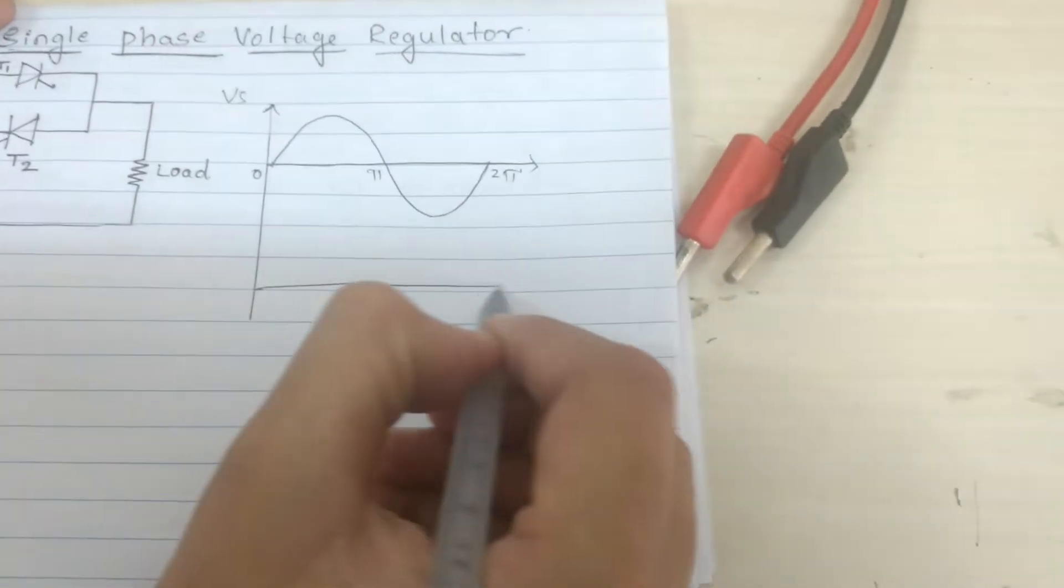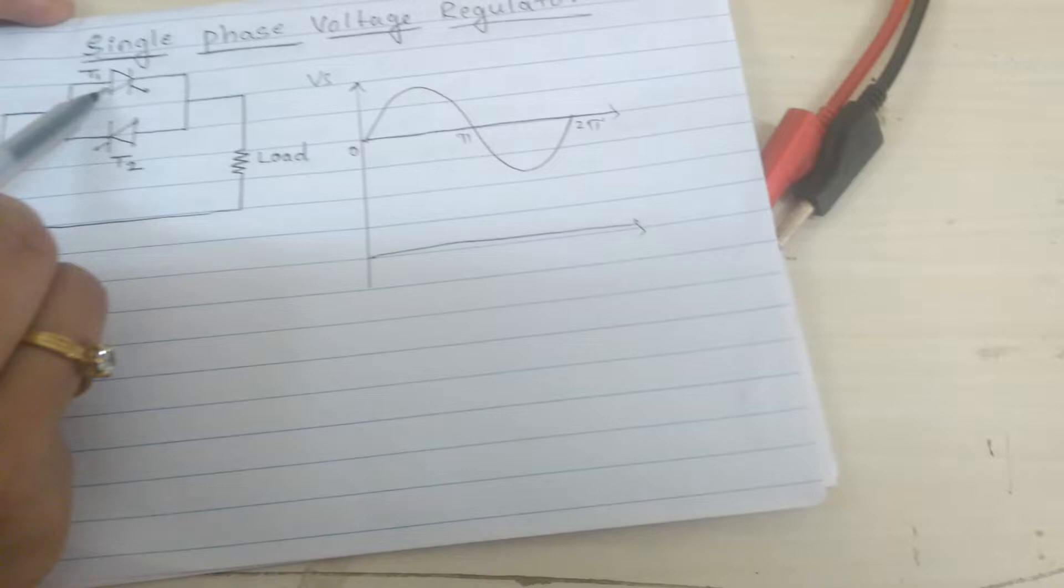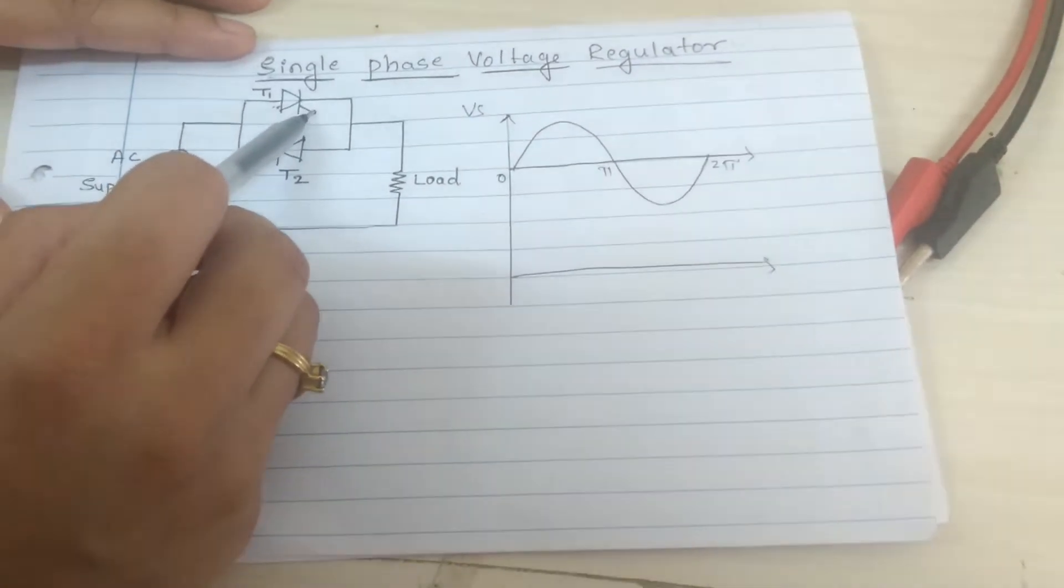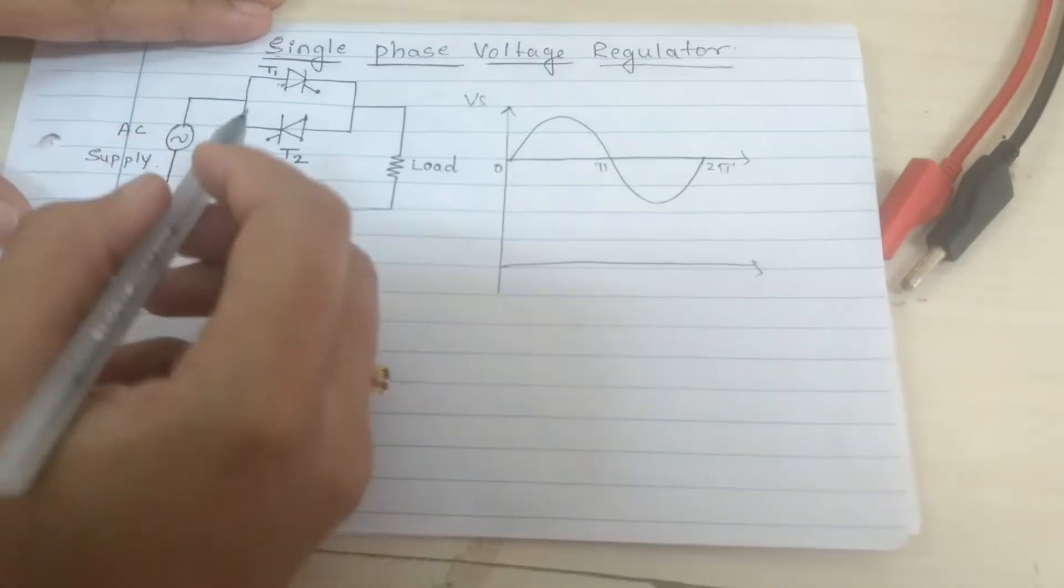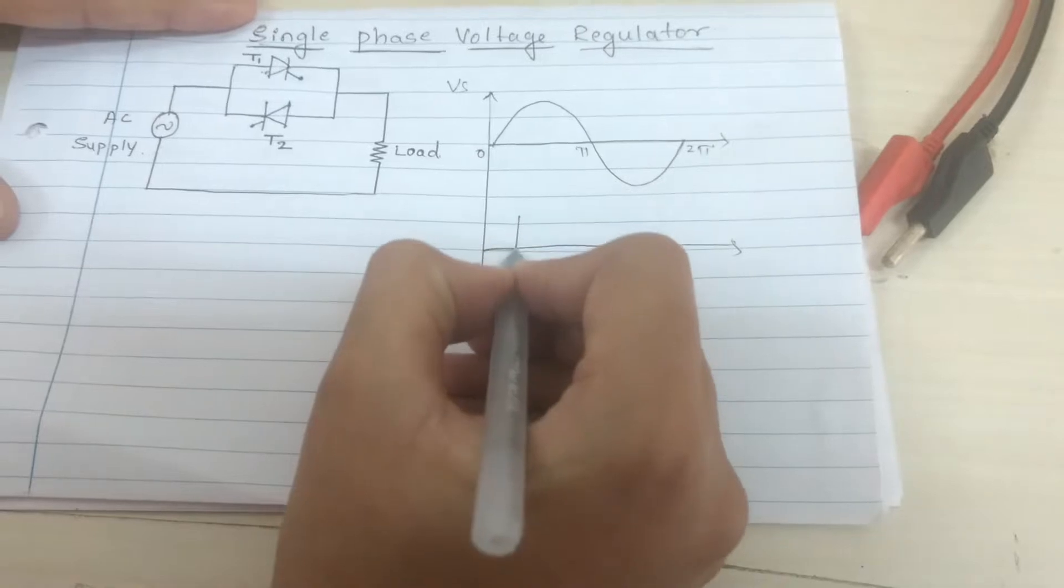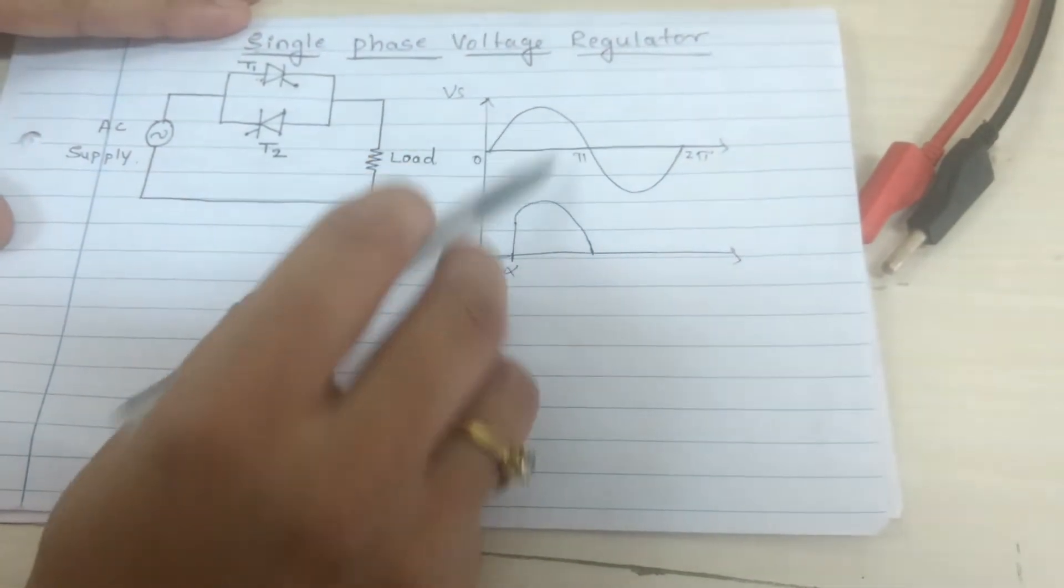The output voltage works as follows: during positive half cycle, this T1 gets forward biased, but it will conduct when the gate of this SCR is triggered. Suppose I trigger this T1 at alpha. So from alpha, this T1 conducts and output waveform will be like this.